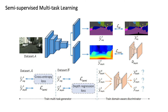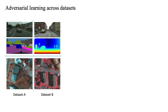We formulate the semi-multitask learning problem in an adversarial learning framework, which consists of two modules: the multitask generator and the task-specific discriminators, where the discriminator provides the semi-supervised adversarial loss for unlabeled tasks. Our approach is motivated by the observation that the output space is structured in dense prediction tasks such as semantic segmentation and depth estimation.